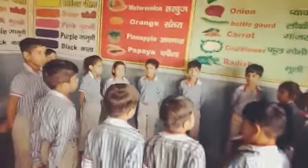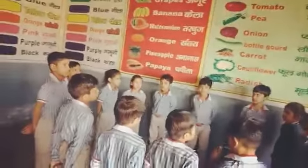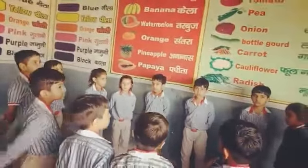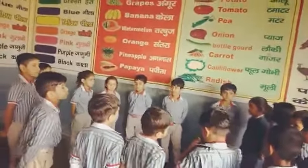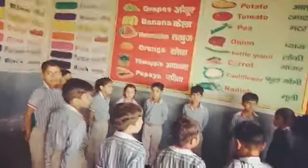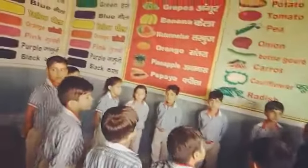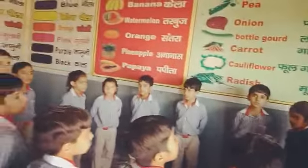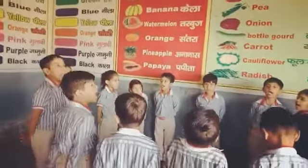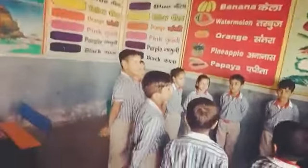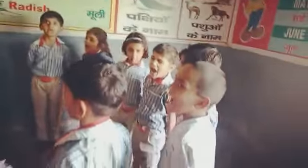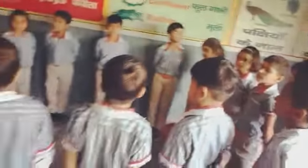What is the fifth month of a year? Very good. What month comes after September? September ke baaz koon sa mahin aata hai? October. Koon sa mahin aata hai? October. Very good.